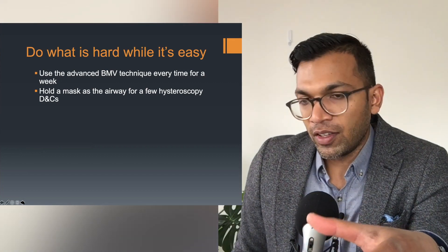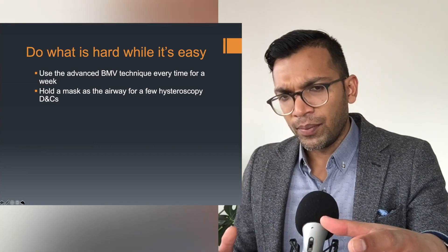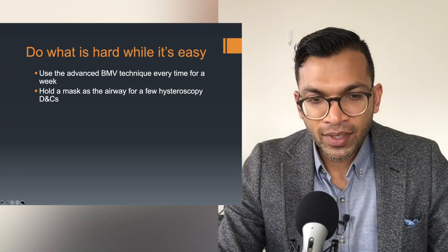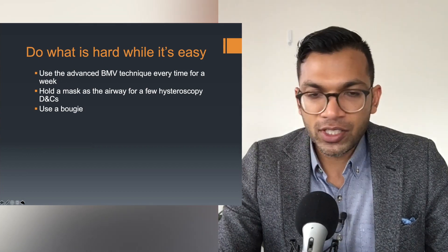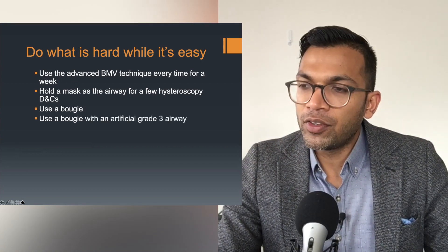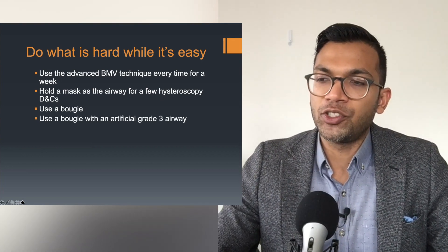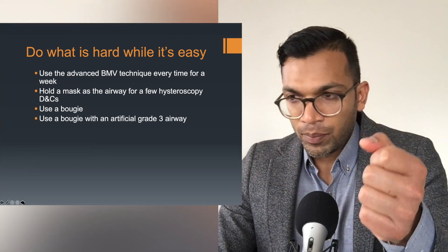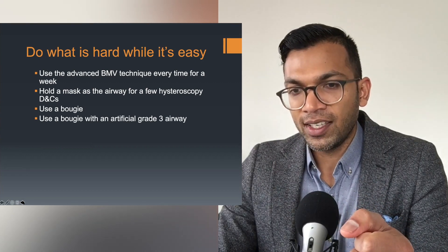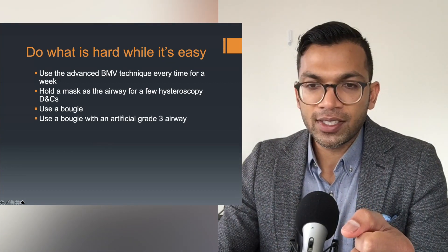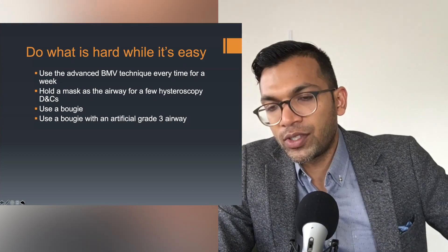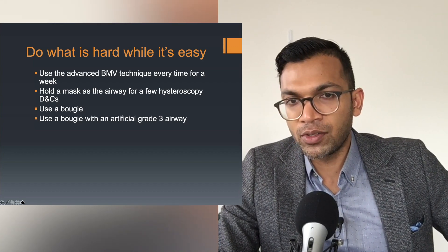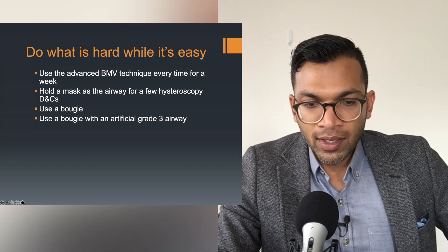That way you really learn the micro-adjustments of the bag mask technique, and you build fatigue resistance in your hands - it's painful but really good for you. Maybe use a bougie electively if you've never used one - use it every single time for a week. Or if you're good at using a bougie, try using it with an artificial grade three view: get your best grade one view with the laryngoscope, then intentionally drop the view until you can only see the epiglottis, then pass the bougie. Do that a hundred times and it becomes second nature.